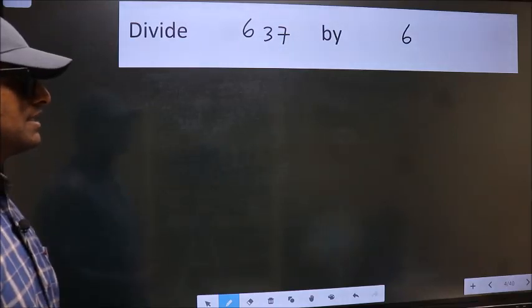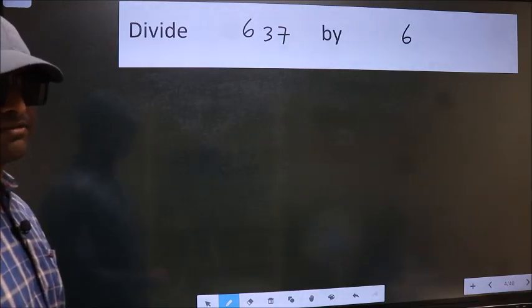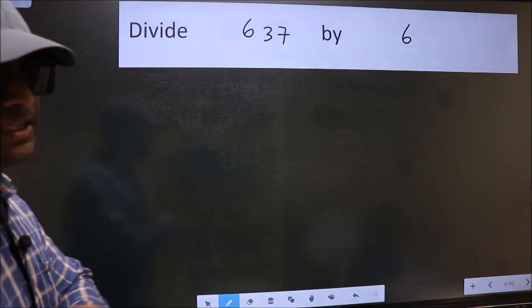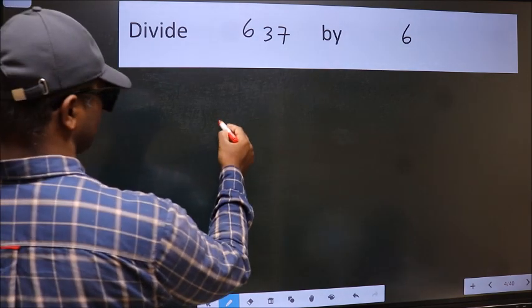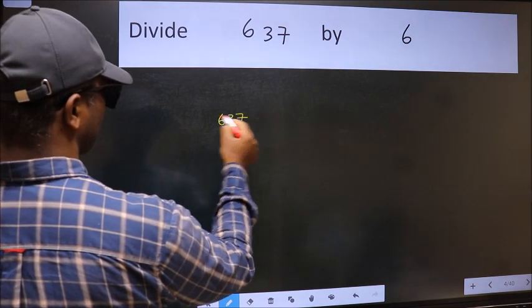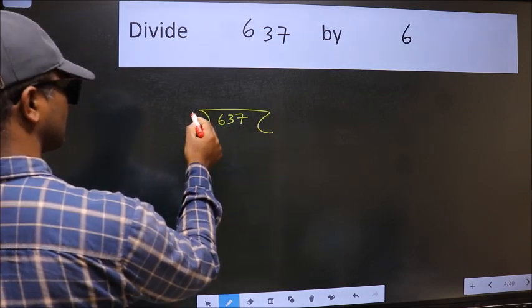To divide 637 by 6, we frame the division this way: write 637 here and 6 here.